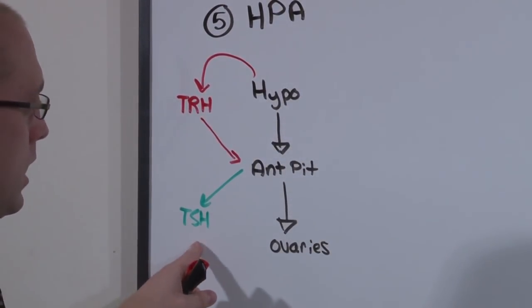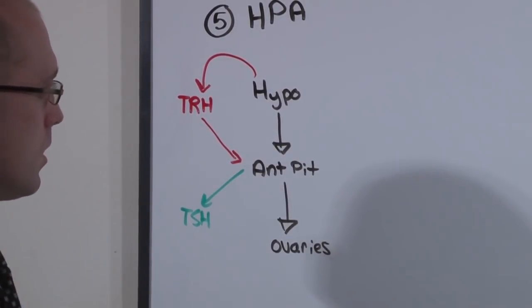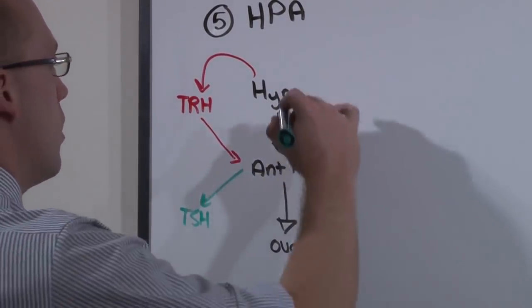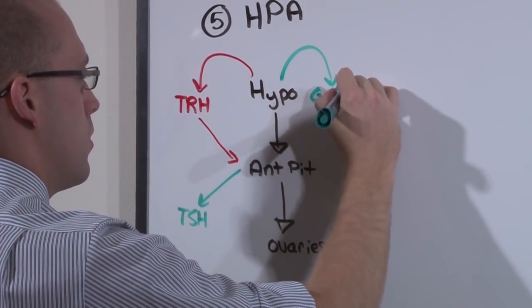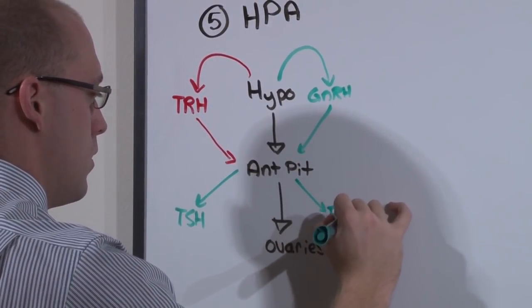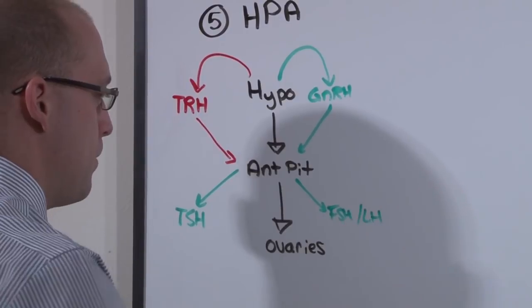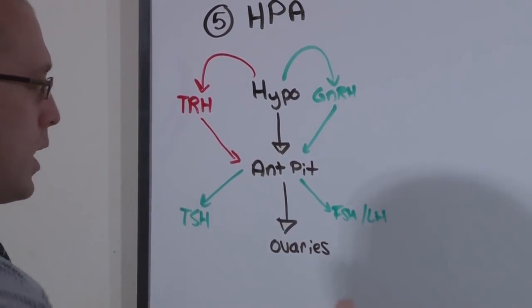TRH tells the anterior pituitary to make TSH. And likewise, anything in green is going to stimulate the axis to occur. The hypothalamus also secretes GnRH. And GnRH stimulates the production of FSH and LH.